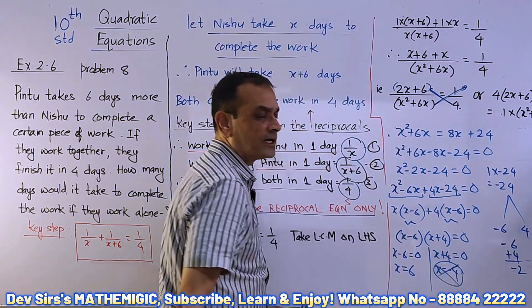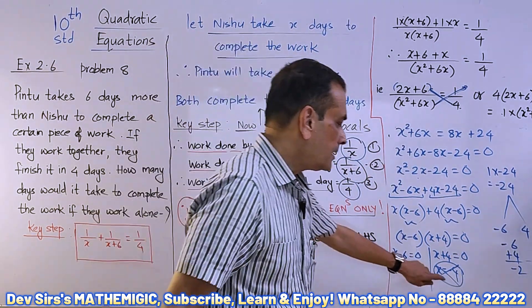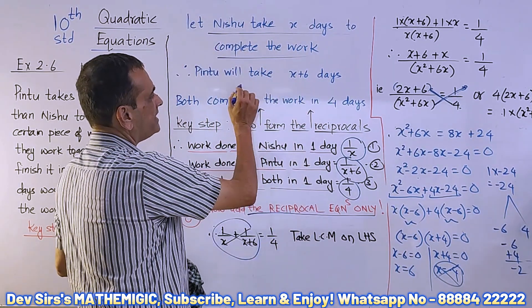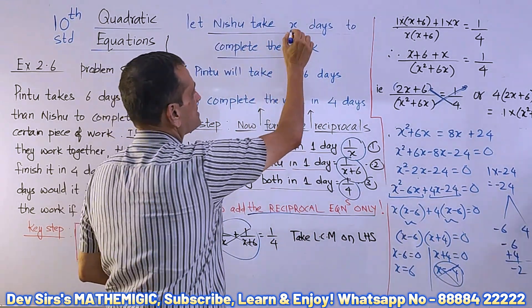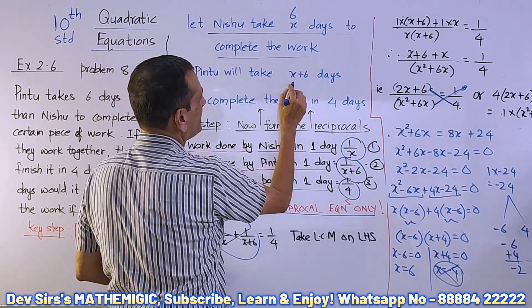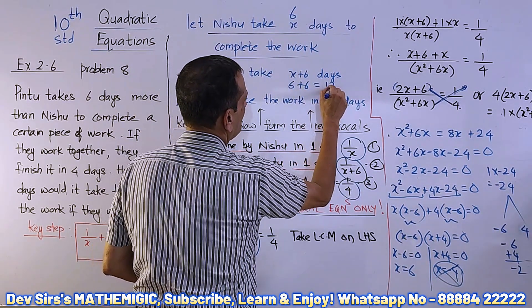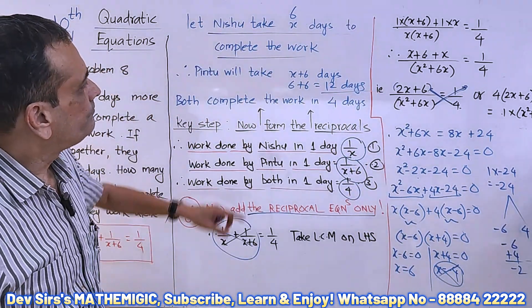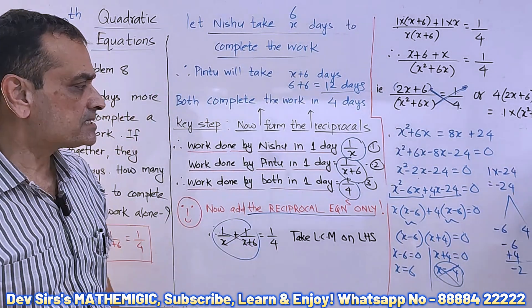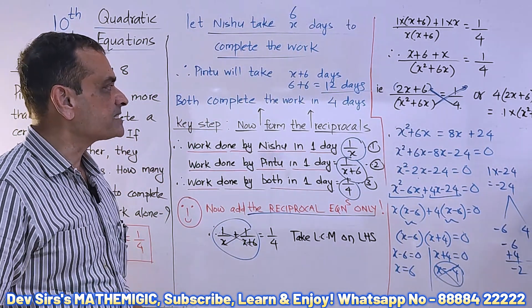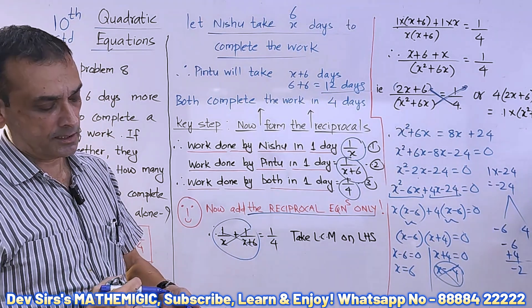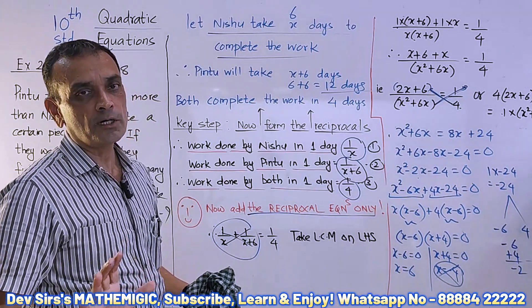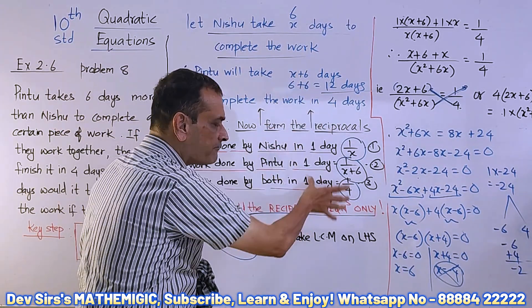We neglect x = −4 because the number of days cannot be negative. So our answer is x = 6. Therefore, Nishu takes 6 days to complete the work, and Pintu will take 6+6 = 12 days to complete the work. In this problem, the important thing is to see how and why to form the reciprocal equations, then concentrate on solving those.